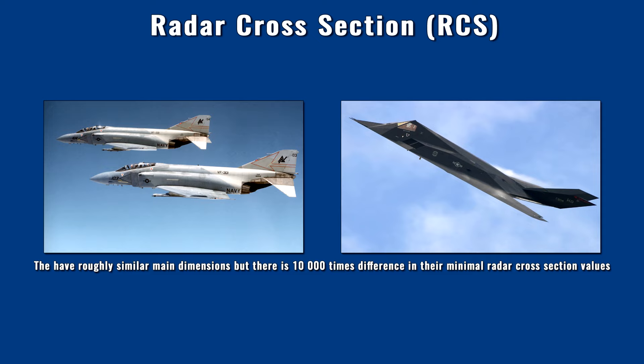With the advent of stealth planes, a new era began. The size of an aircraft does not indicate the magnitude of its radar cross-section. Between the F-4 Phantom and the F-117 with similar dimensions, there are 4 orders of magnitude differences in the radar cross-section in some directions. An order of magnitude means a 10-fold difference, so here we are talking about a 10,000-fold difference. Since the approach phase is the most important during air combat, priority was given to reducing the frontal radar cross-section. However, in other directions, the reduction may be smaller, but it is still significant compared to conventional planes.